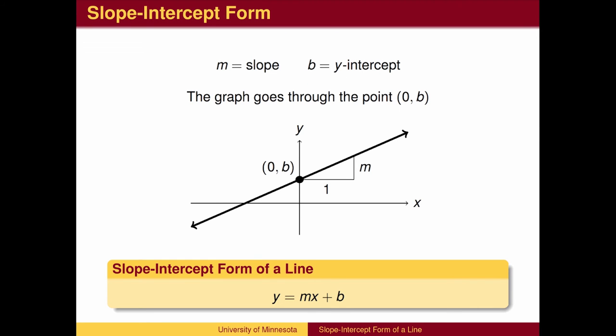This is the slope-intercept form of a line. If we know where the line crosses the y-axis and the slope of the line, we can write the slope-intercept form of the line y equals mx plus b.